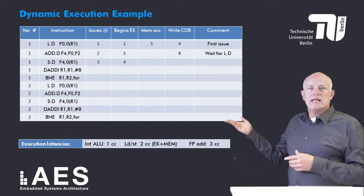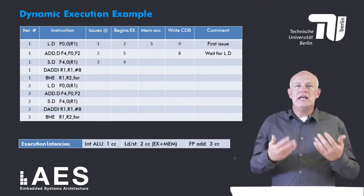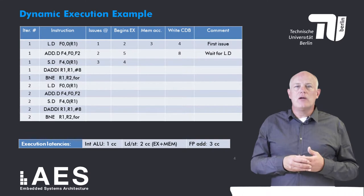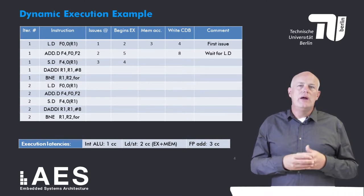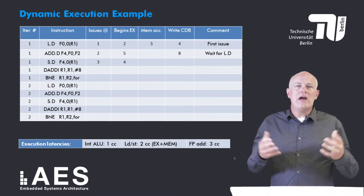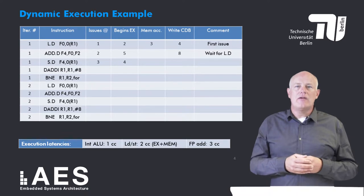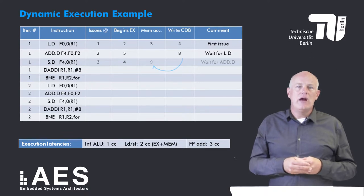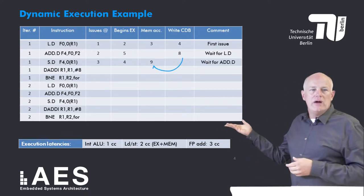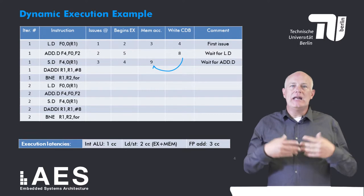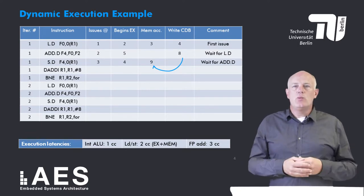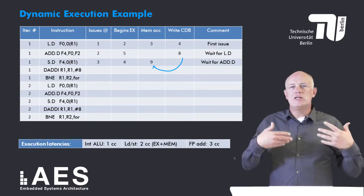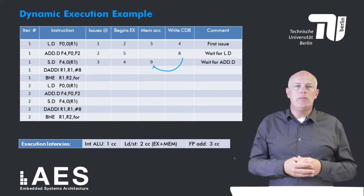The next instruction, the store double, is issued in clock cycle 4 and starts executing in clock cycle 4, where the effective address is calculated in its execution stage. However its memory access stage cannot start until clock cycle 9, since it must wait until the preceding add double has placed its result onto the CDB.